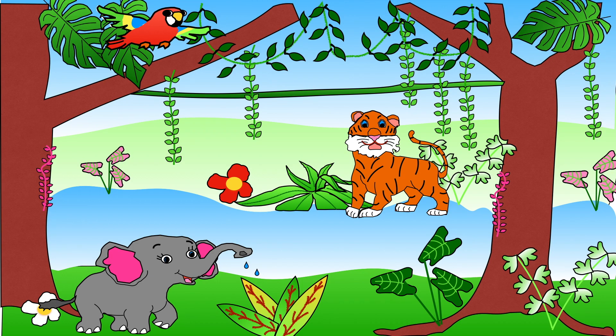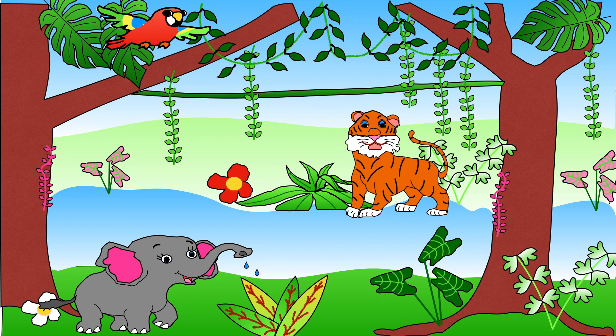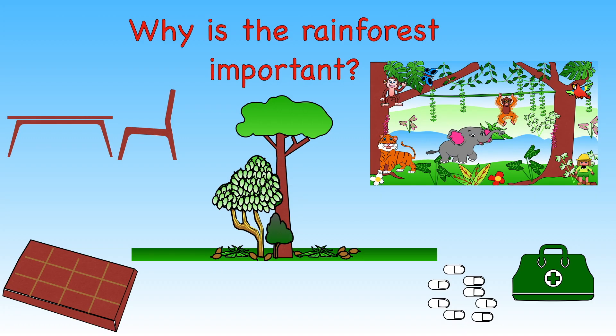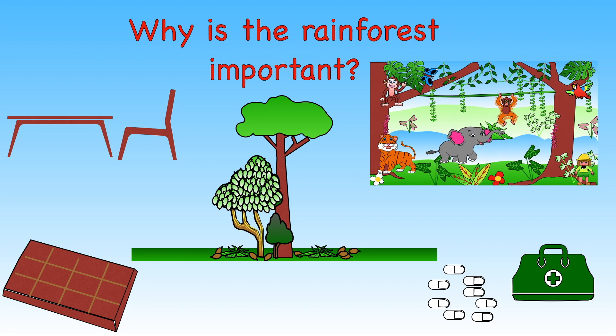Rivers and streams also run through rainforests and animals use the water here to drink. Let's find out why tropical rainforests are important. Well, as you can see, they provide a place to live for many different animals and plants. Some of the plants found in the rainforest are used as ingredients for making medicines.